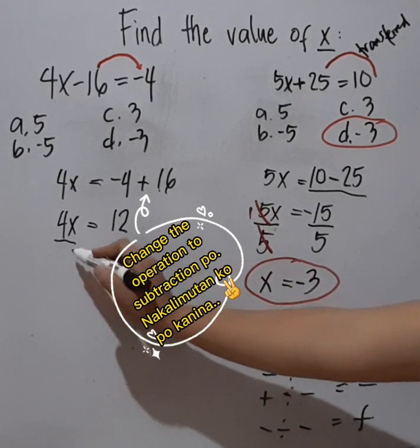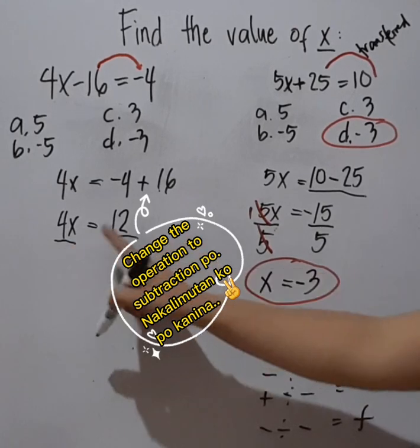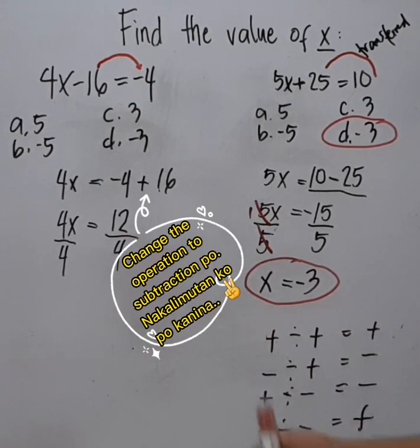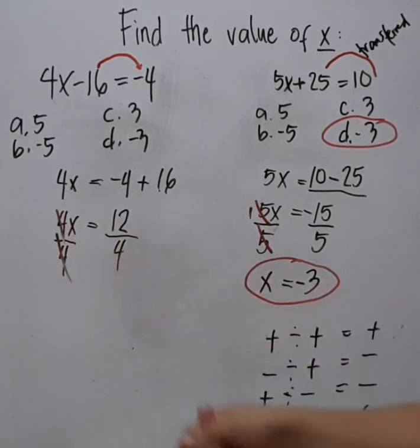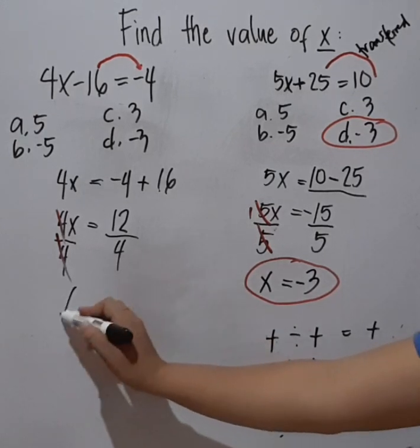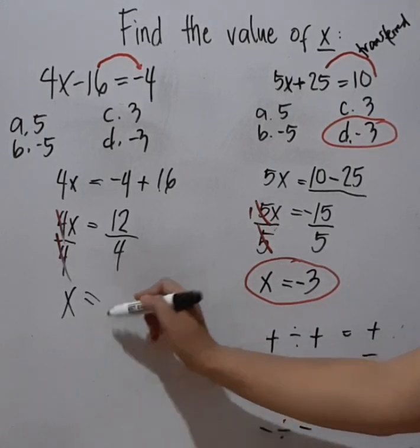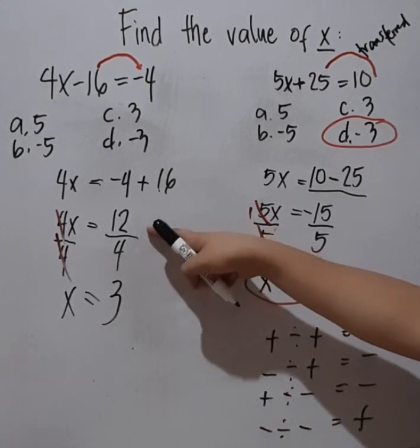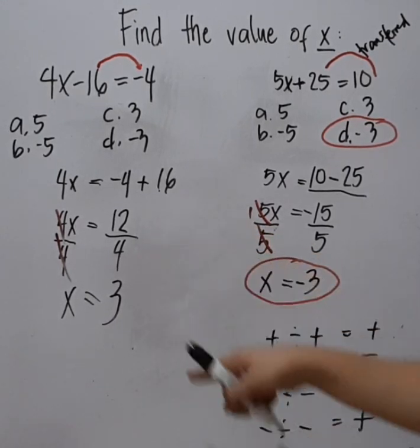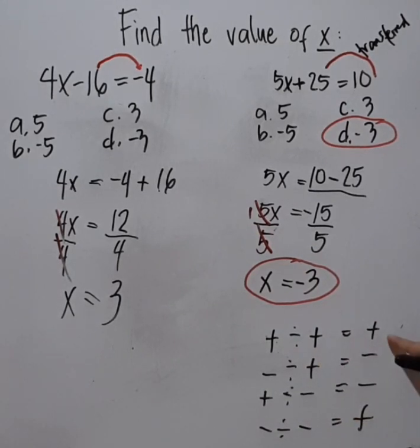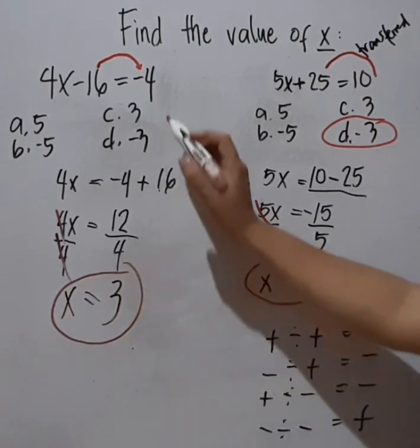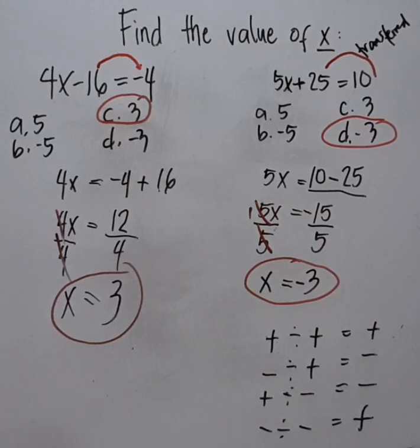And to eliminate the value of x, same thing, both sides will be divided by 4. So here, this is cancelled because it's 1. And then just retain x. And then 12 divided by 4 will give us 3. Because they're both positive. Both positive is positive result. So now, x is 3. Our answer is letter C. So see the difference.